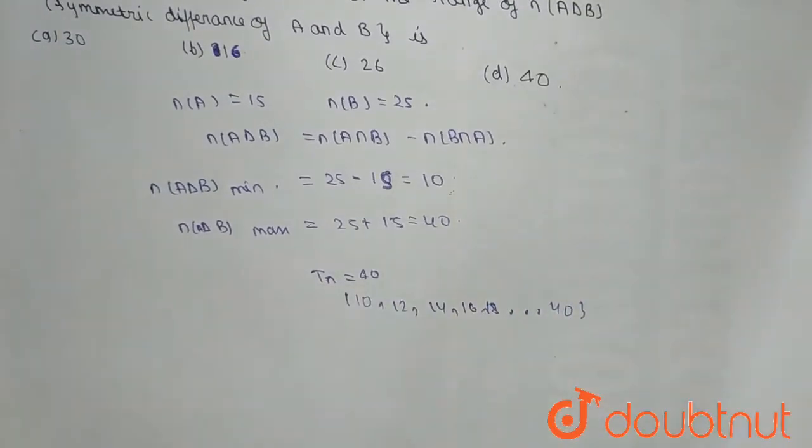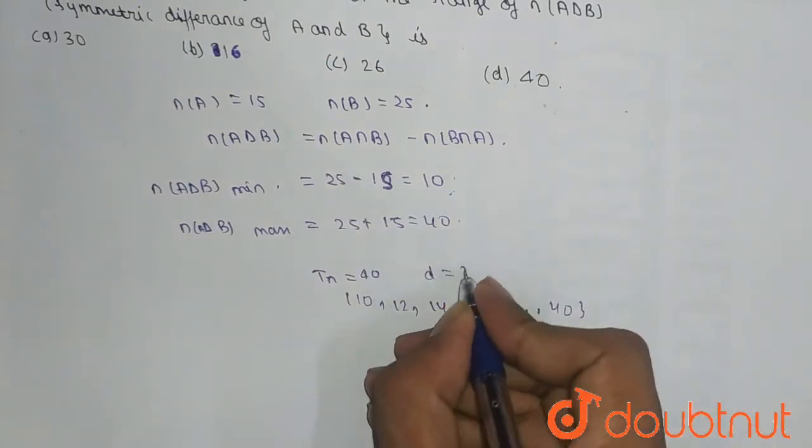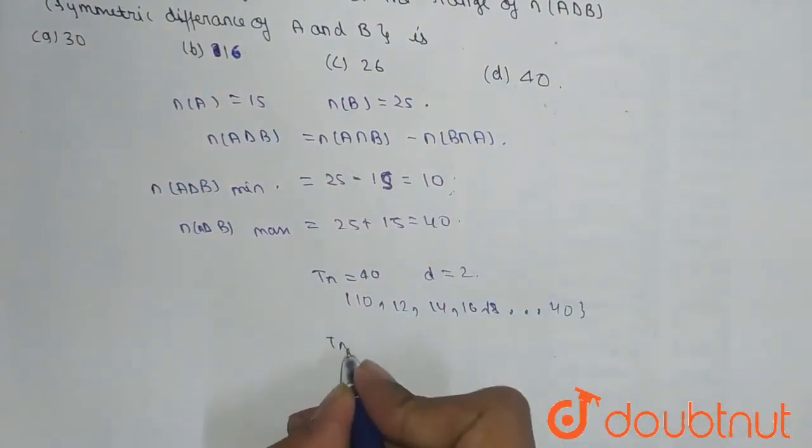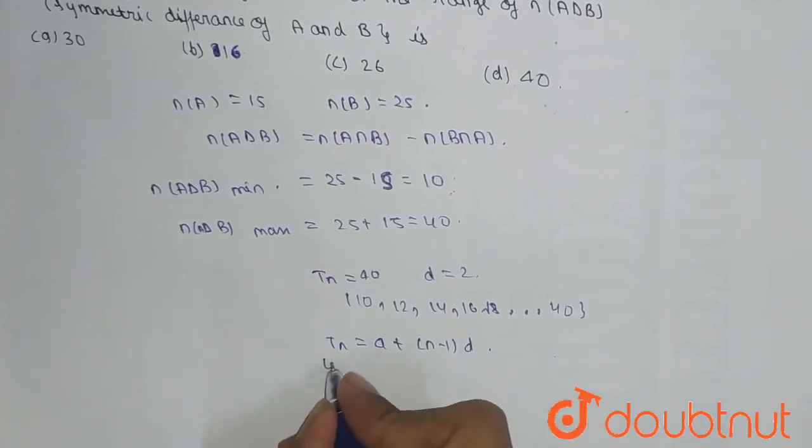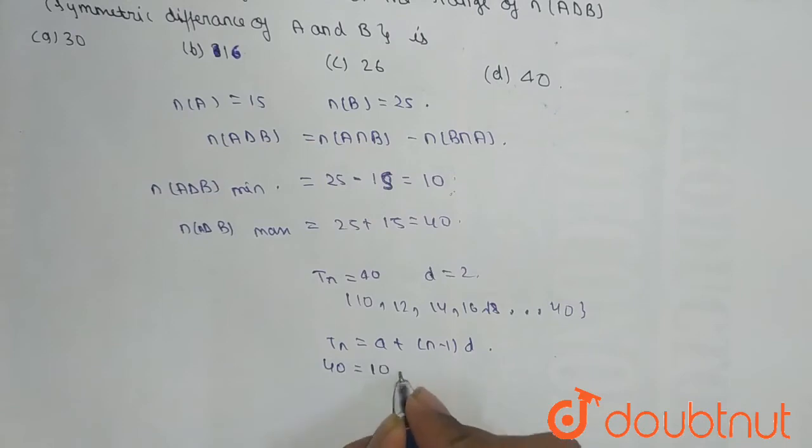And here what we have given is that we get the value of tn. tn is equal to 40 and the common difference d is equal to 2. So we know the formula of tn is equal to a plus (n minus 1)d.